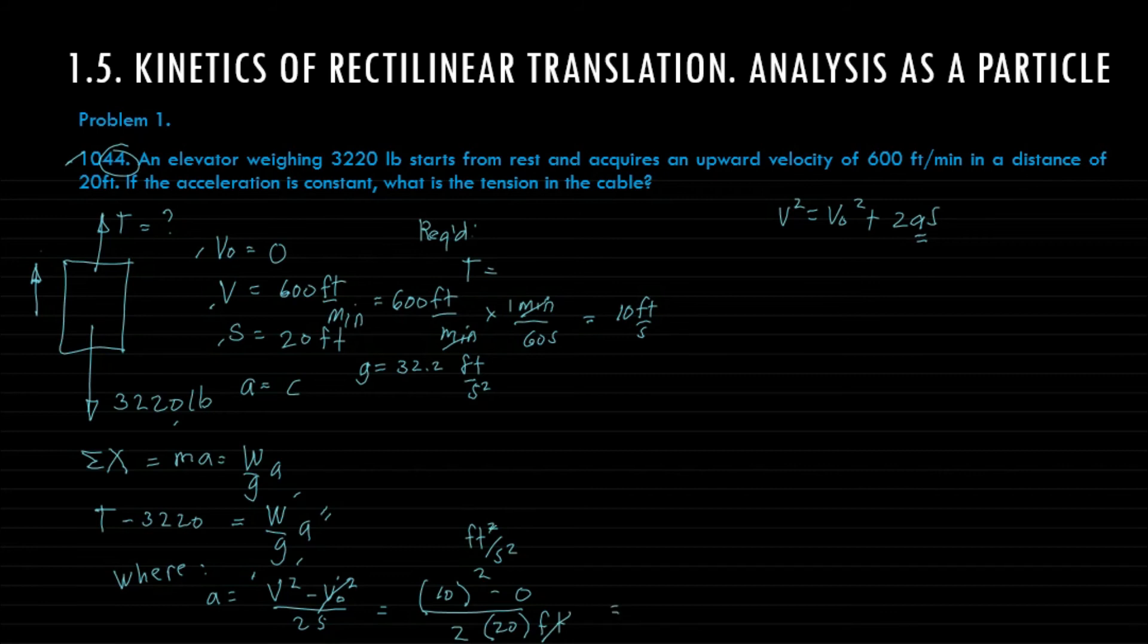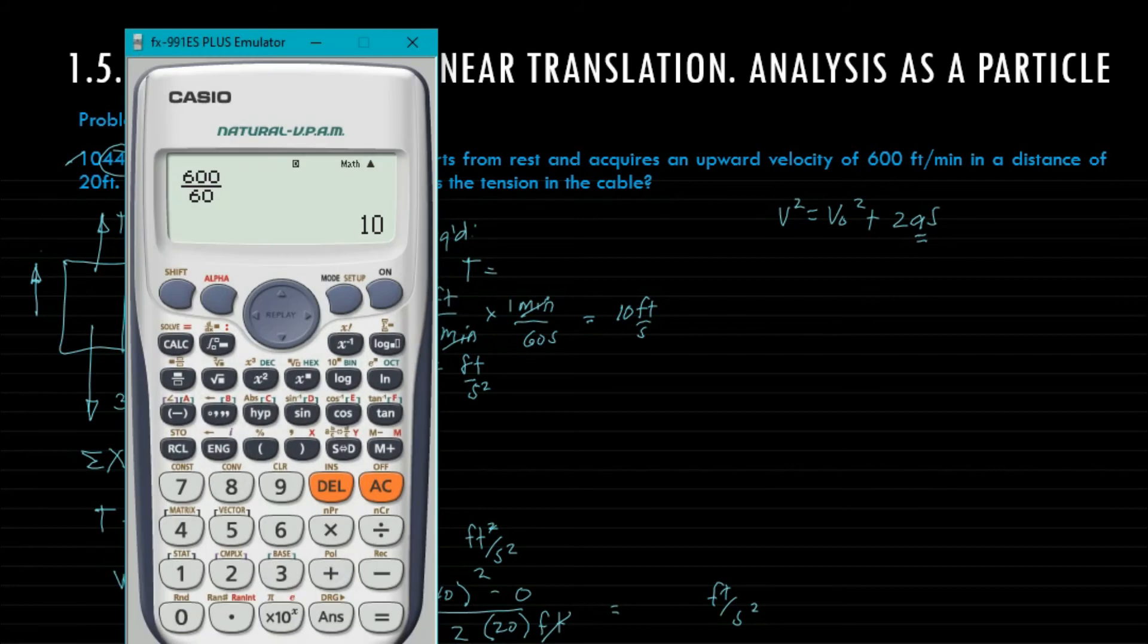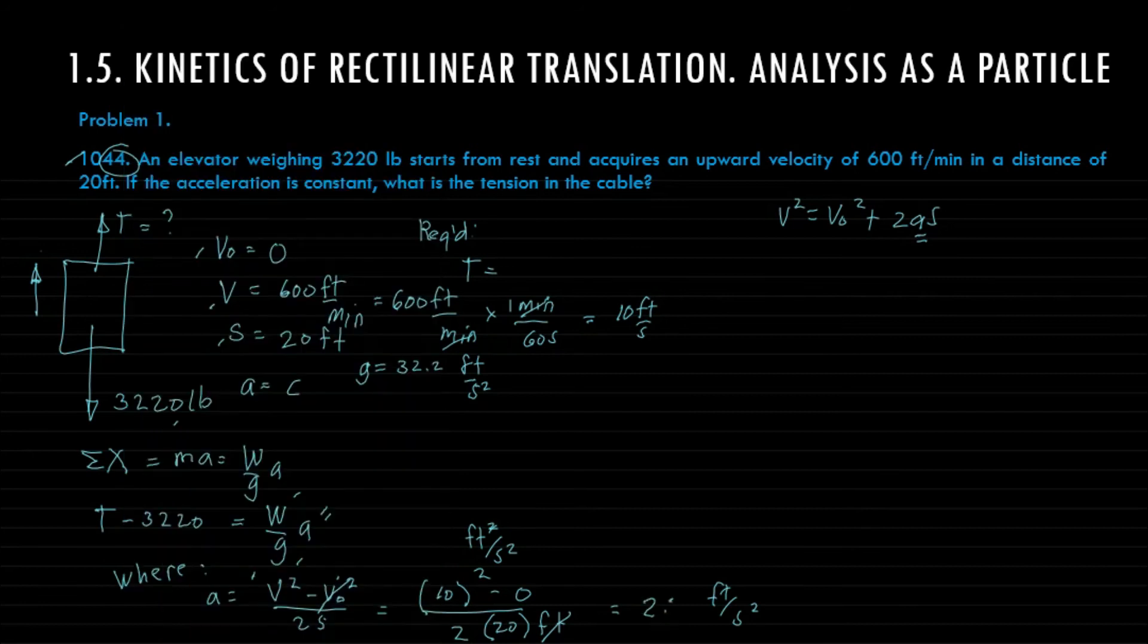This is feet, this is feet, this is feet squared per second squared. Our unit will be feet per second squared. Compute the value of a: 10² over 2 times 20 equals 2.5 feet per second squared.